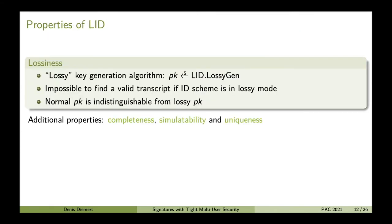A lossy identification scheme is an identification scheme with certain properties. The most important one is lossiness: there is an alternate lossy key generation algorithm which only produces a public key instead of a public key-secret key pair. For lossy public keys it is impossible to find a valid transcript. Another important property is that normal public keys are indistinguishable from lossy ones. Other properties include completeness — honestly generated transcripts are valid — and simulatability — we can produce transcripts without having a secret key.